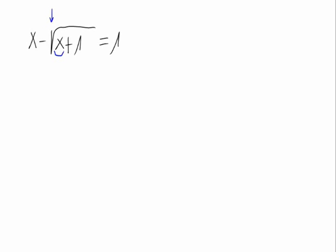Therefore, as we only have one square root, our purpose is to isolate the square root. In our case, to isolate this root, let's move the X to the other side of the equal. We would have minus the square root of X plus 1 equals 1 minus X.